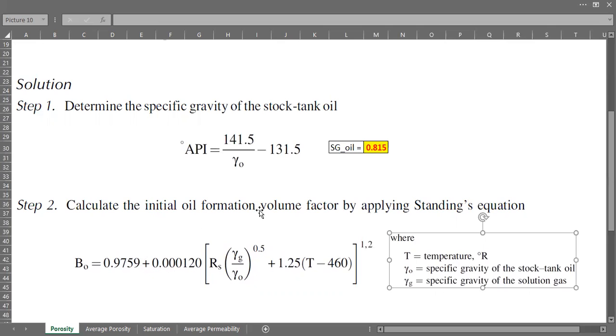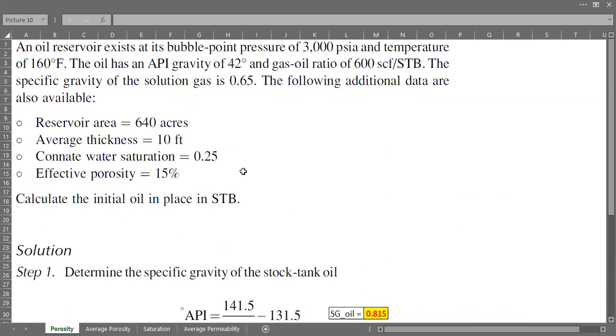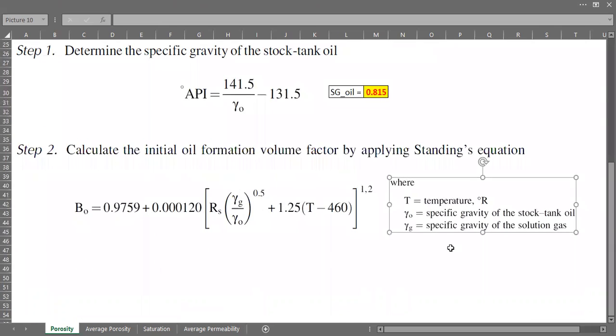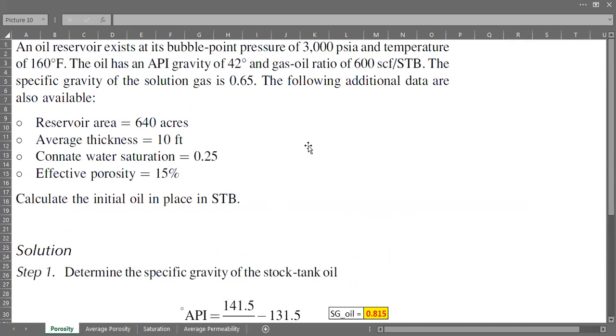So Bo, we can calculate Bo, initial oil formation volume factor or oil formation volume factor, only by using this equation. Rs is the solution GOR and we know the information about it, and then this one is specific gravity of the solution gas, specific gravity of the oil we've just calculated that, and the temperature in Rankine. So let's calculate it.